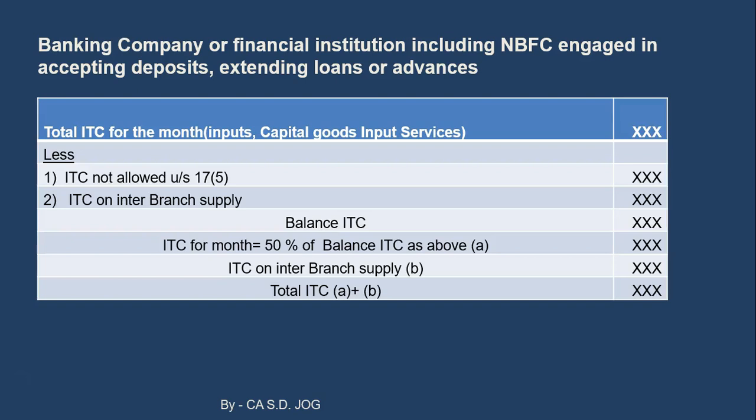The formula under the 50% methodology is as follows. Take the total input tax credit for the month — for banks there is no bifurcation into inputs, input services and capital goods separately; an ad hoc overall method for all is given. Total ITC for the month includes input tax credit on inputs, capital goods and input services — all of them. From that, deduct: first, ITC not allowed under section 17(5). Those input tax credits which are not at all allowed under GST — like beauty or health club treatment etc. — are to be removed, whether used for business or not.